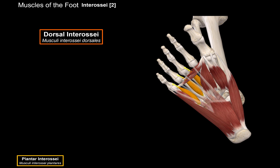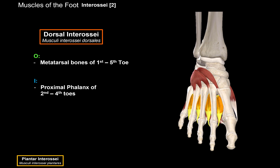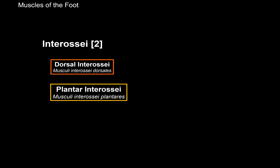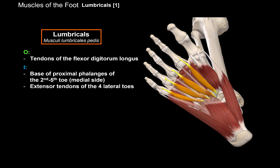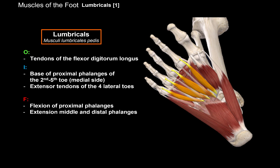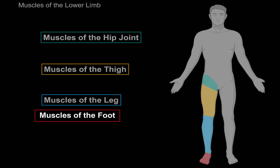Then we have the dorsal interossei muscles — four muscles located in the 1st to 4th interossei spaces between the metatarsals. They originate between the metatarsals of the 1st to 5th toes and insert at the proximal phalanges of the 2nd to 5th toes on the medial side. When they contract, they abduct the toes, pulling them away from the 2nd toe. Then we have the lumbricals — four muscles corresponding to the 2nd to 5th toes. They originate from the tendons of the flexor digitorum longus and insert at the base of the proximal phalanges of the 2nd to 5th toes on the medial side, as well as at the extensor tendons of the four lateral toes. The lumbricals allow the toes to flex the proximal phalanges while extending the middle and distal phalanges — and that was all the muscles of the foot.